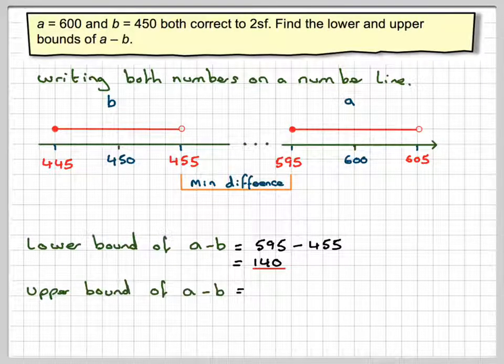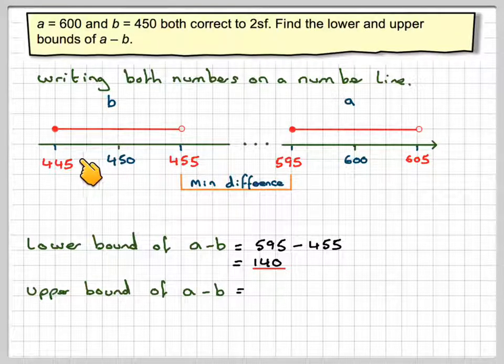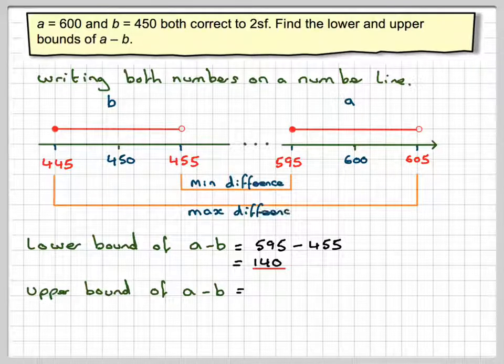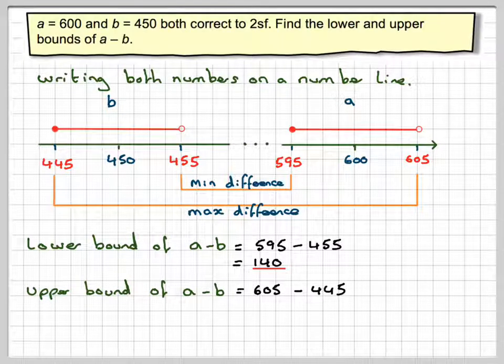And the upper bound of A minus B is going to be the highest value of A minus the smallest value of B, which is that difference, which is going to be 605 minus 445, which is 160.